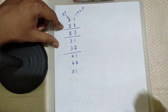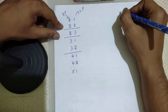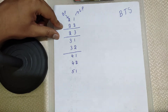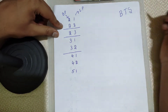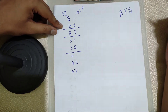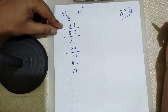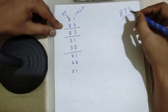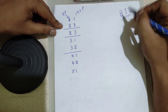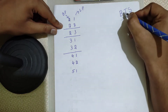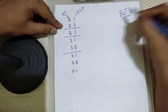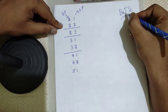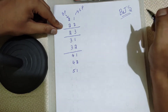You might have heard of BTS — one of the most famous Korean music bands. You might have heard of BTS Army or something like that. So you have to remember BTS with a small modification: just add L here — small L. So it becomes BLTS. That's the trick to remember.